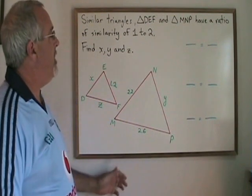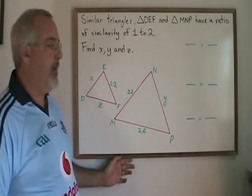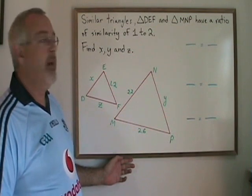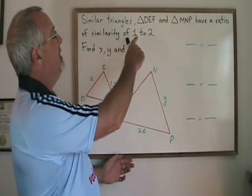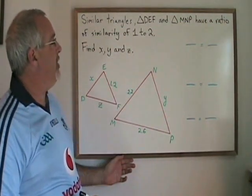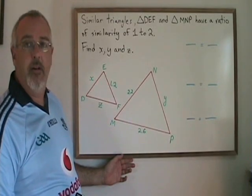This video shows how to find missing side lengths in a pair of similar triangles when you are given a ratio of similarity. In this case, these triangles have a ratio of similarity of one to two.